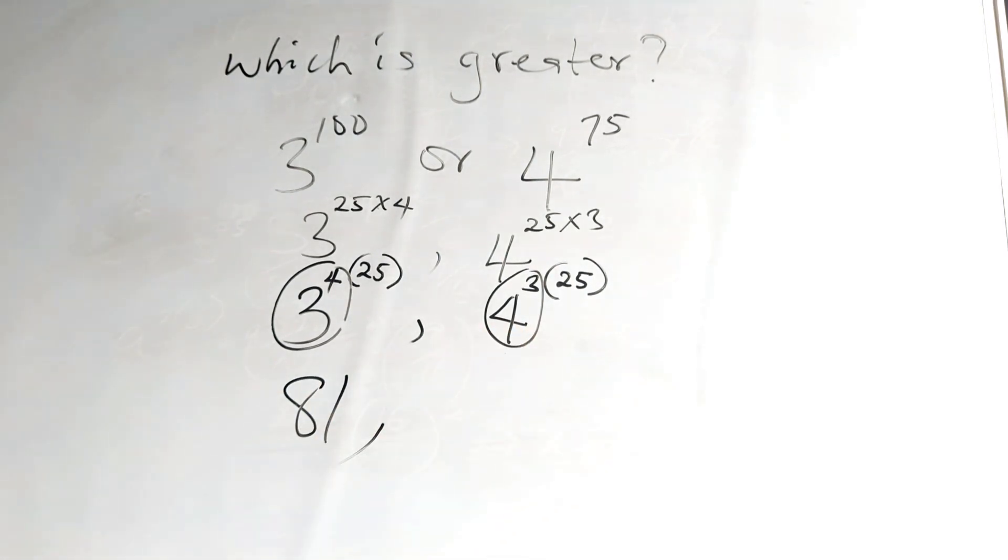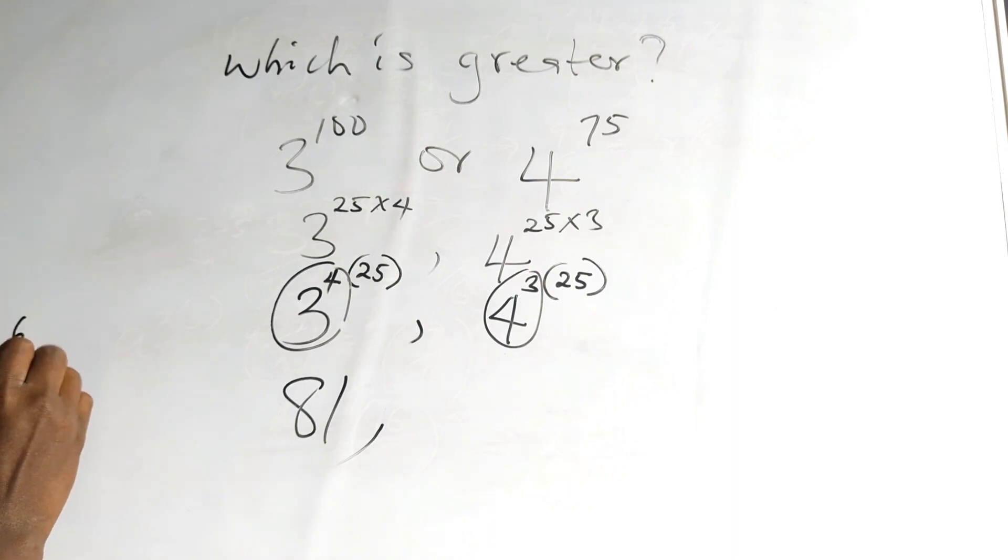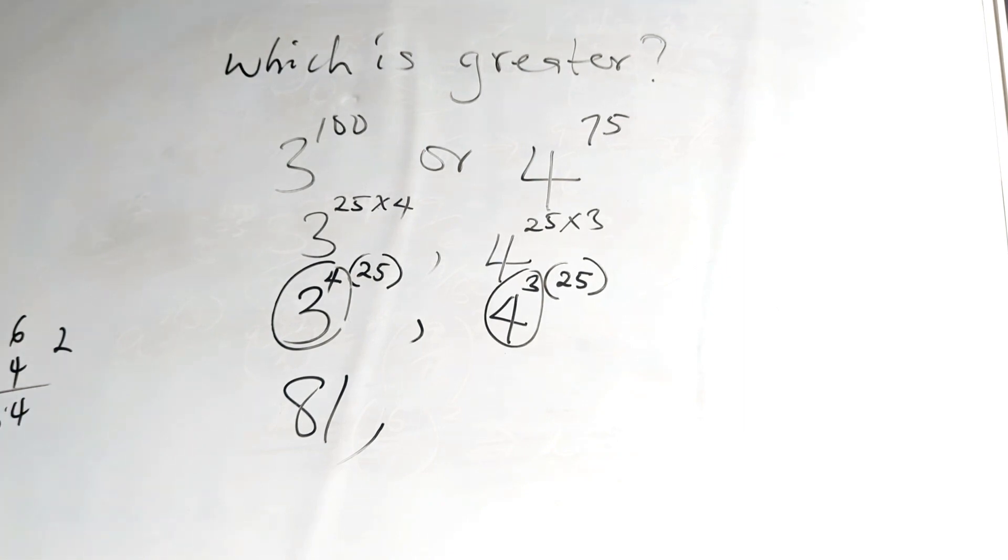And then, what is 4 raised to power 3? Which is 4 into 3 places. So, 4 raised to power 3 is 4 times 4 times 4, which is 64.